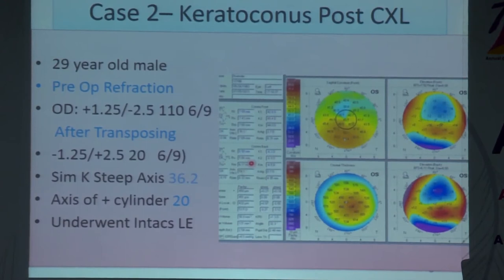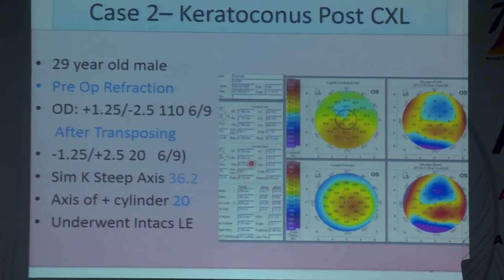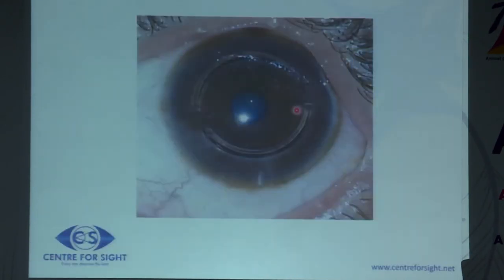For a patient who has been cross-linked, you can go one segment thicker post-cross-linking because a cross-linked cornea flattens less. Ideally, the intacs segment should be placed with or before cross-linking. A patient with a higher cylindrical component and more peripheral cone benefits from an asymmetric or single thick segment placed inferiorly.